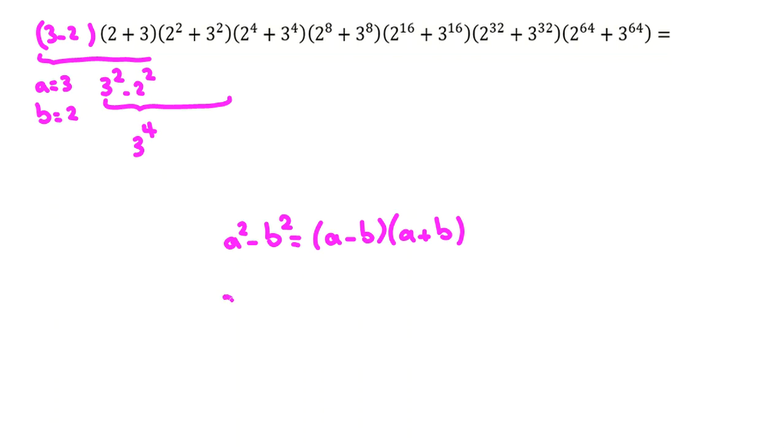Because (3²)² - (2²)² equals (3² - 2²)(3² + 2²).